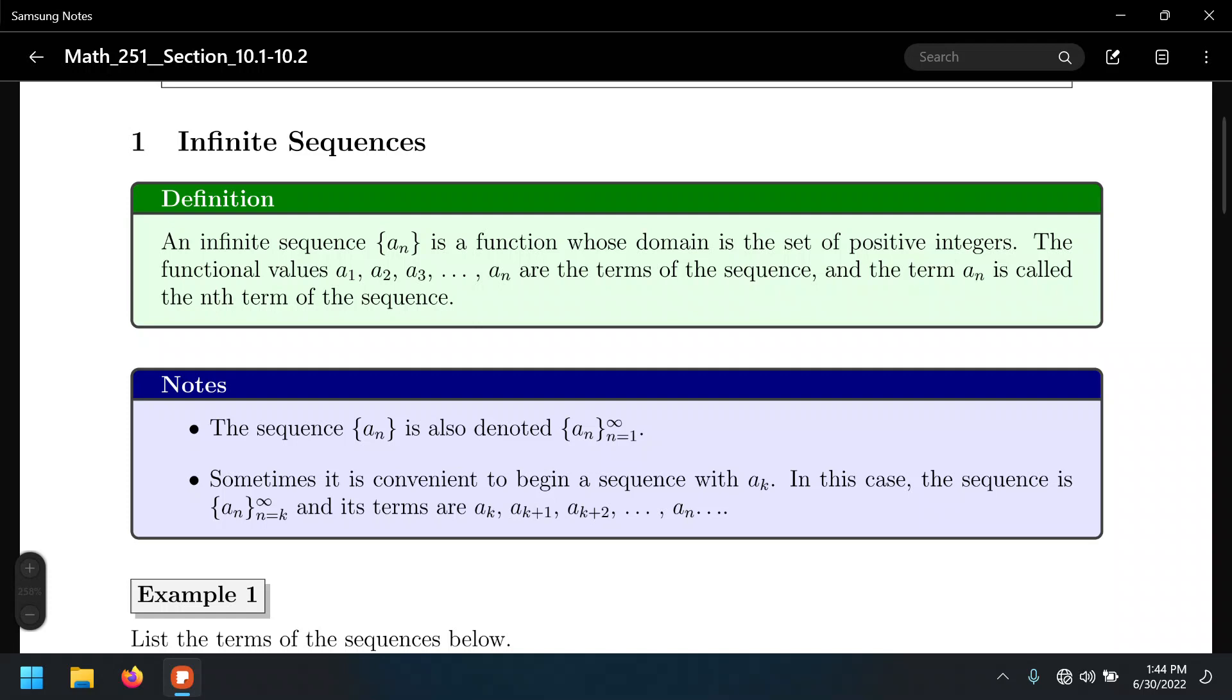There's no such thing as the 3.5th term. Like, you're in a competition. In a competition, one can win the first, the second, and the third prize. Can you win the 2.5th prize or the 3.79th? There's no such thing. That's the idea with the infinite sequences. That's why the domain is only the natural numbers.